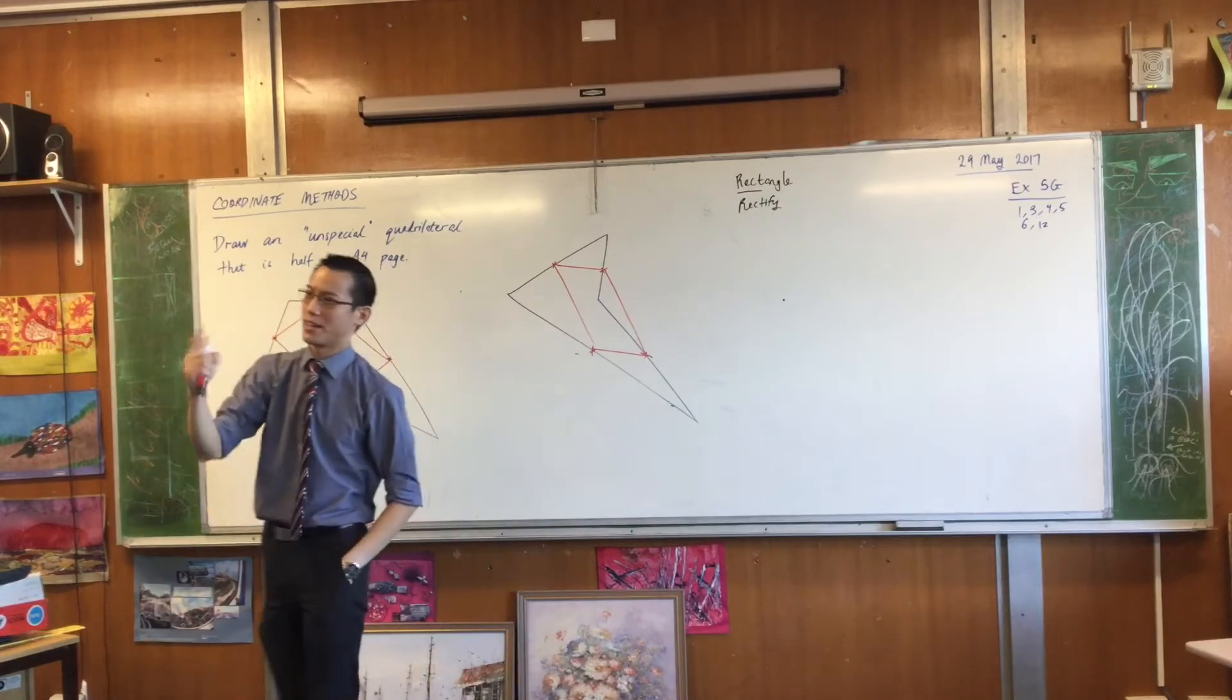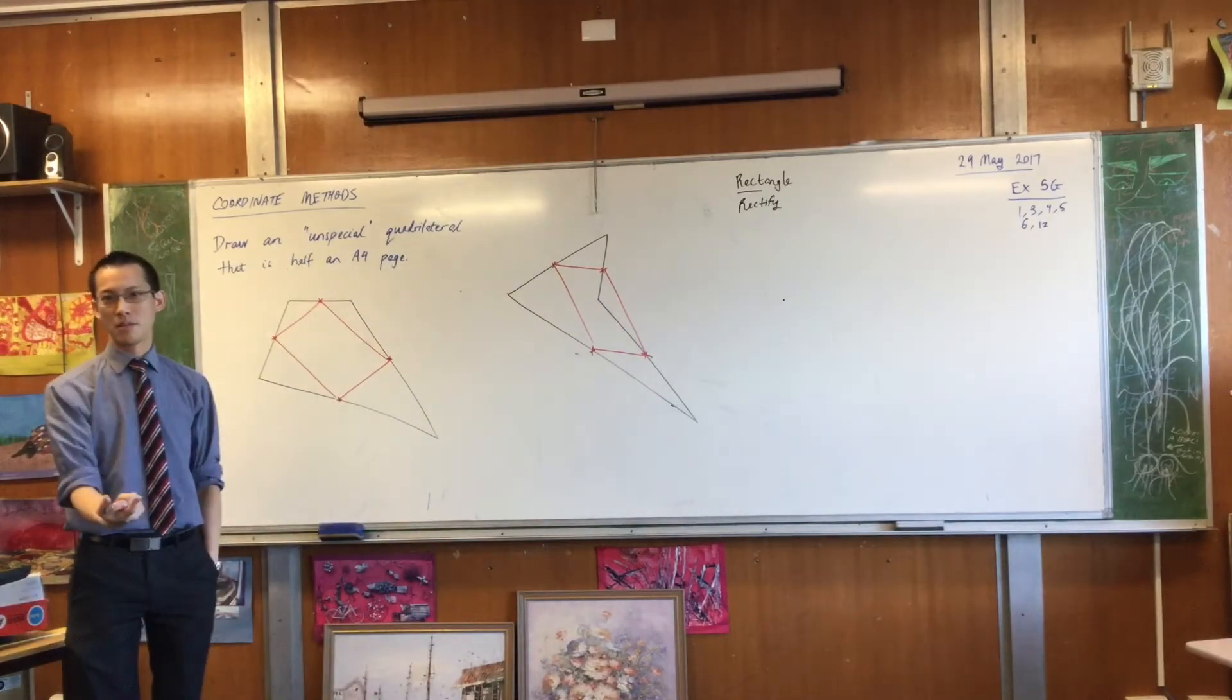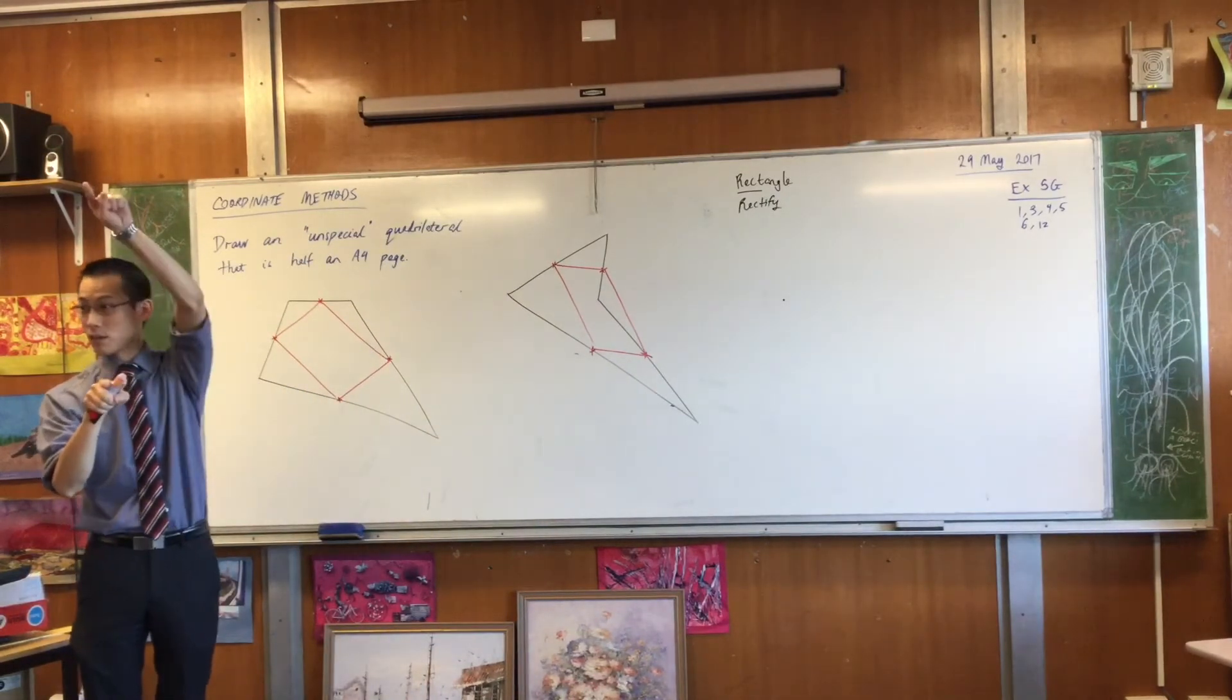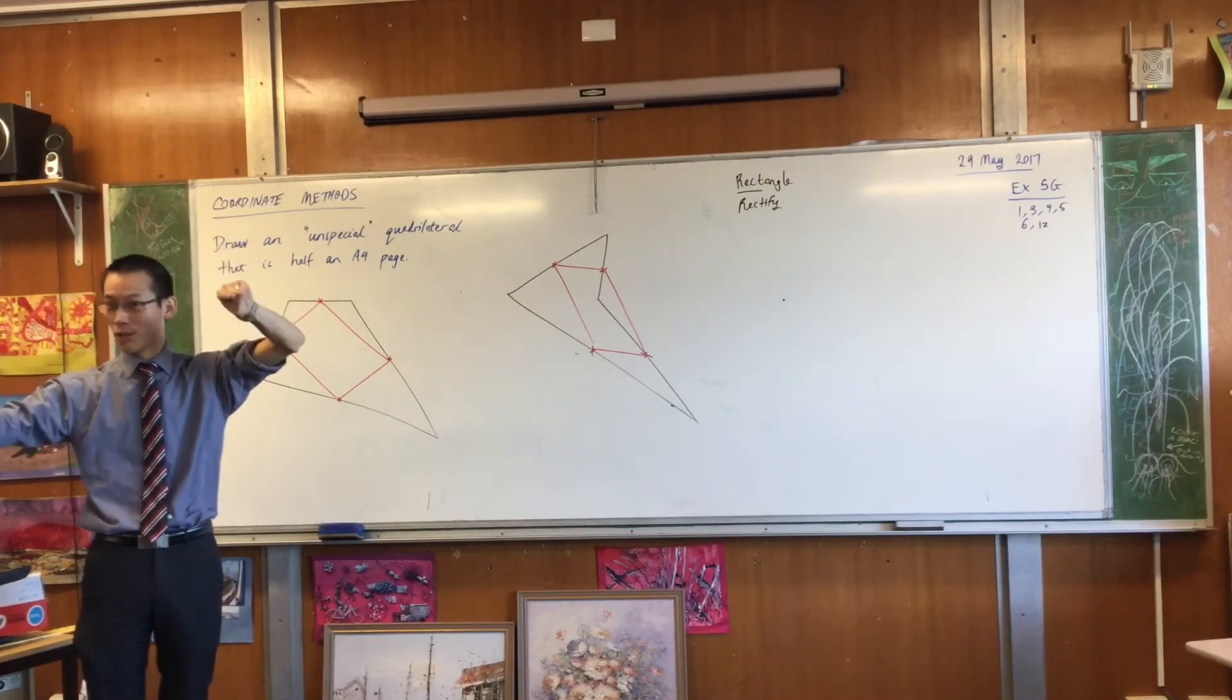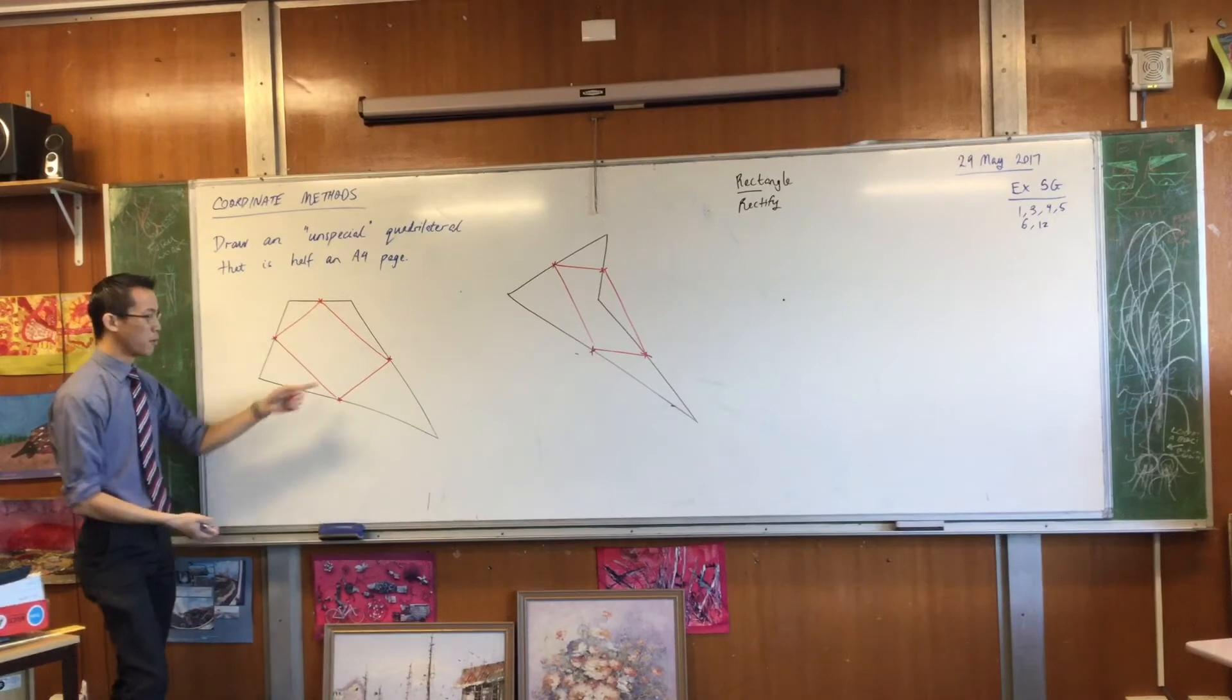So if you put one right angle inside the parallelogram, what happens? Well that makes the opposite angle also a right angle, which makes the other two also a right angle. So all of a sudden, you put one in, you've got four.